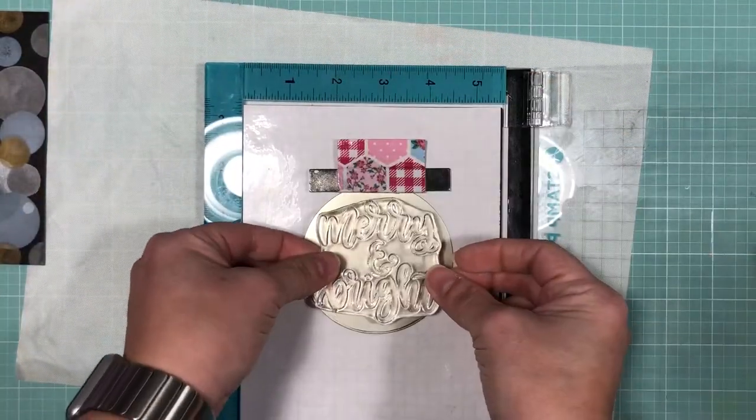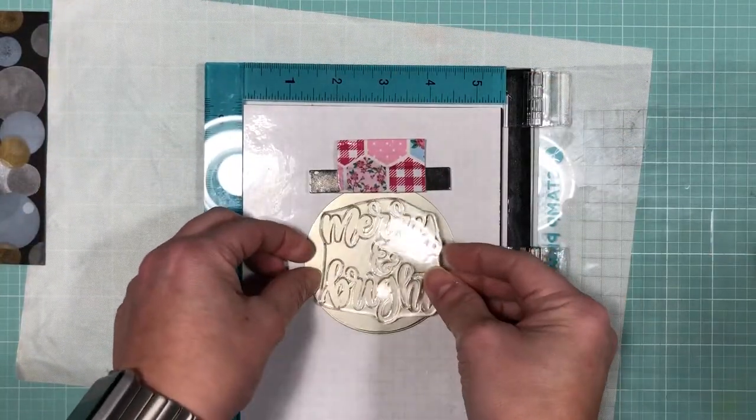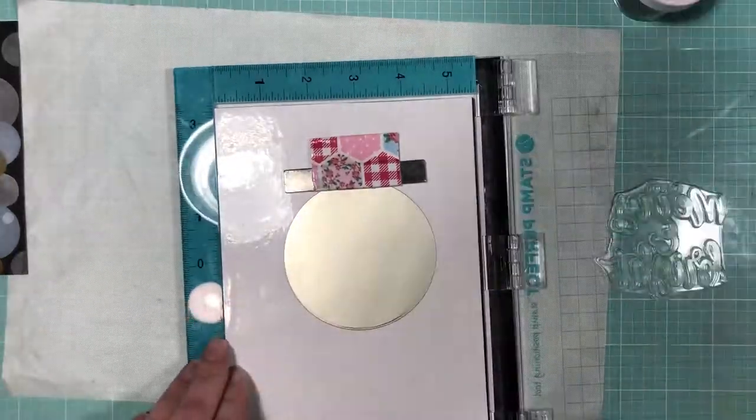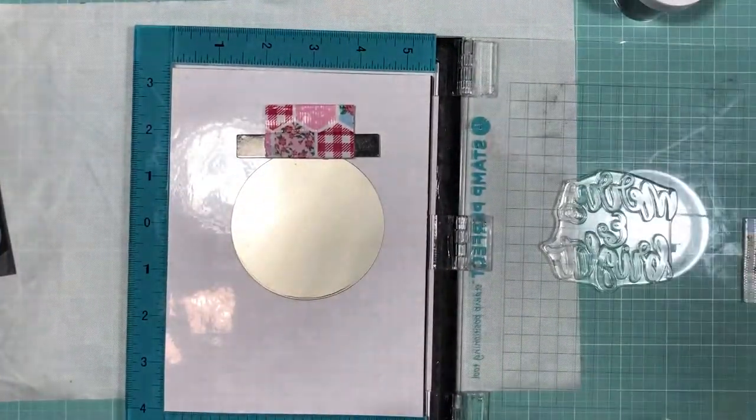To make sure I get a good impression, I'm going to use my stamp positioner as this paper isn't very conducive to ink, so this way I have a better chance of getting a good impression.